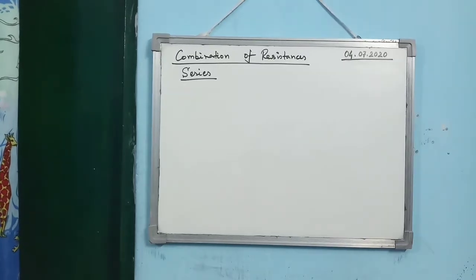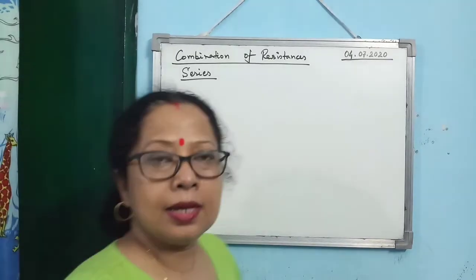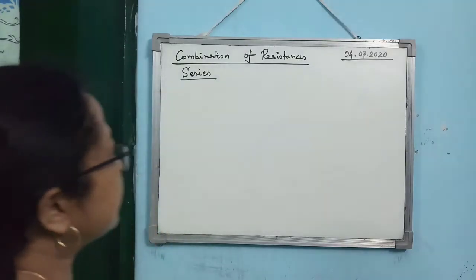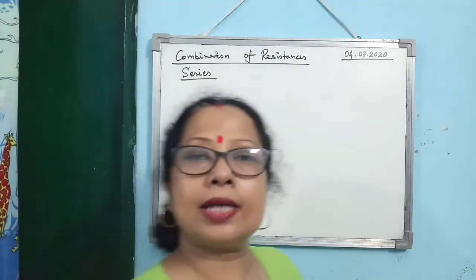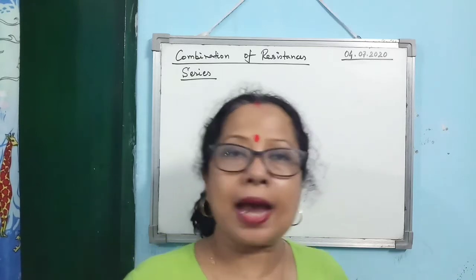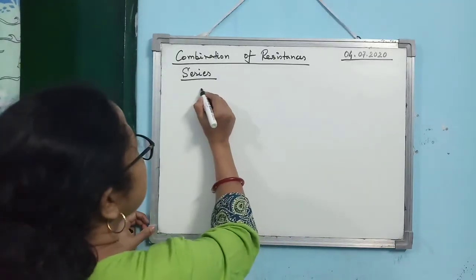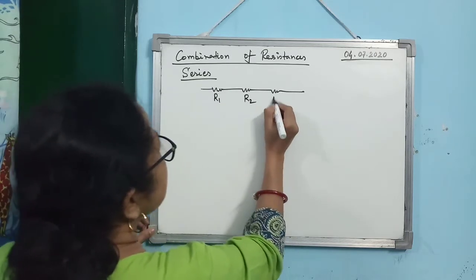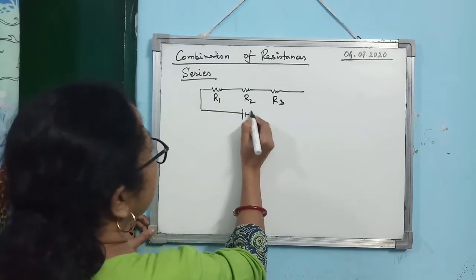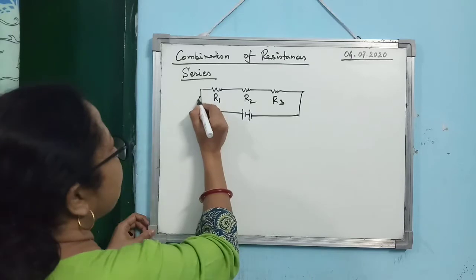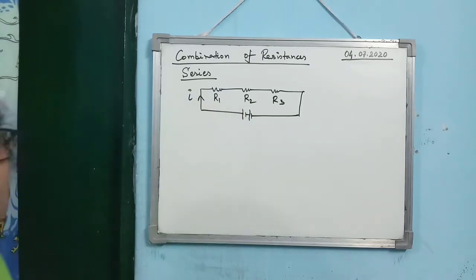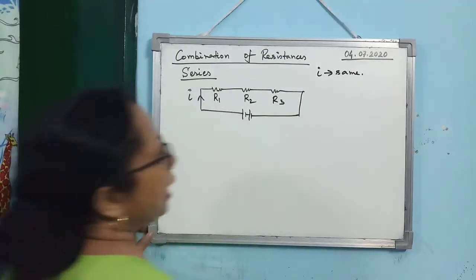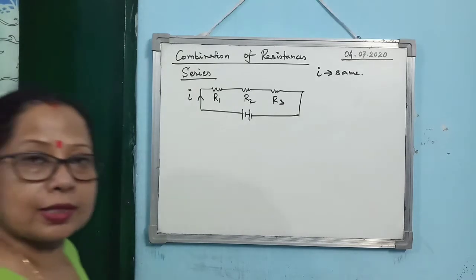The next topic — combination of resistances — you have already studied in Class 10. You can combine resistances either in series or in parallel. For series connection with three resistances R₁, R₂, R₃: the current I is the same for all resistances, but the potential differences across each resistance are different.